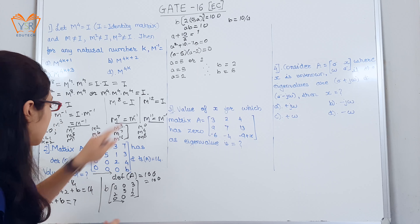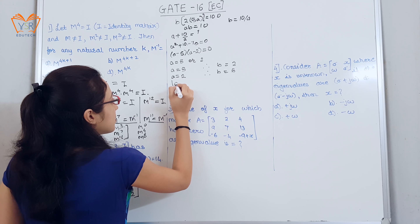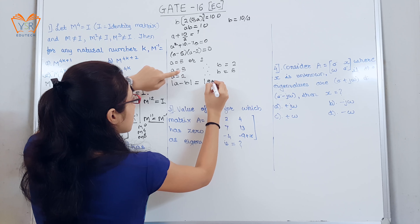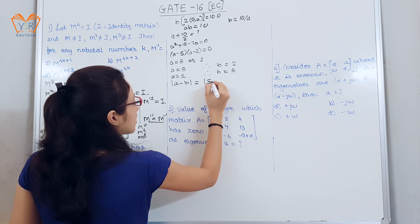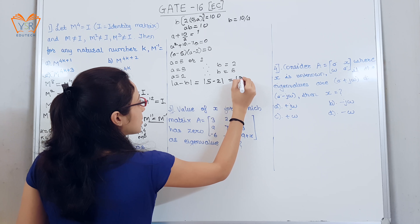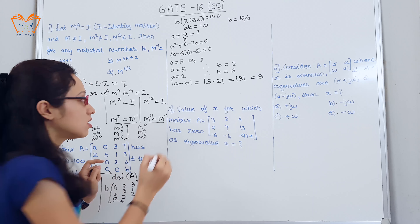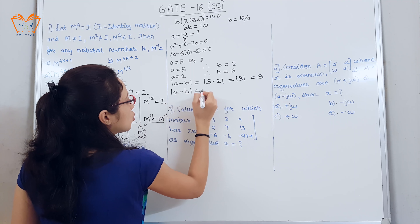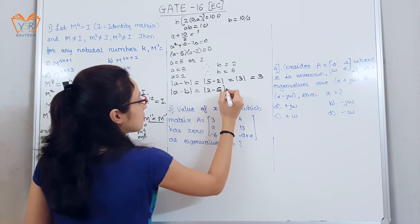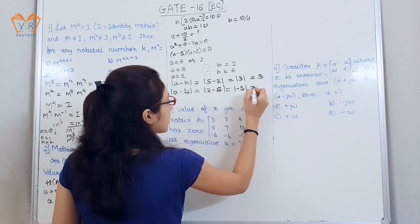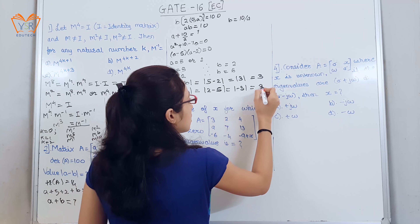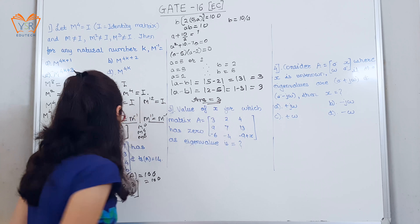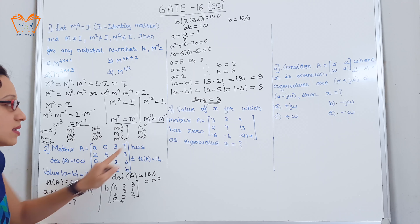Now we have both values. We find the absolute value of A minus B. If A = 5: |5 − 2| = 3. If A = 2: |2 − 5| = |−3| = 3. So the absolute value of A minus B is 3.